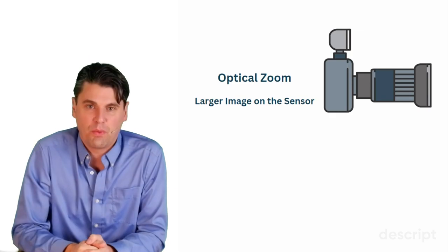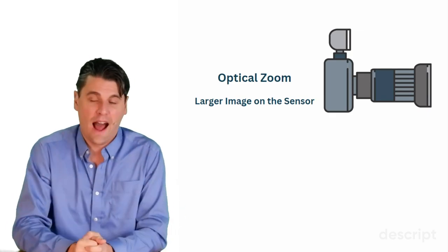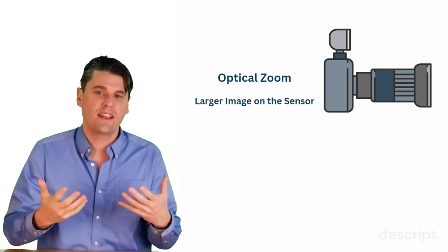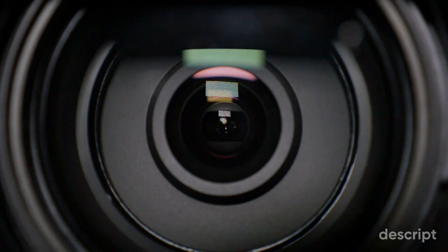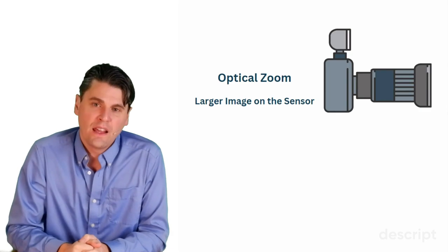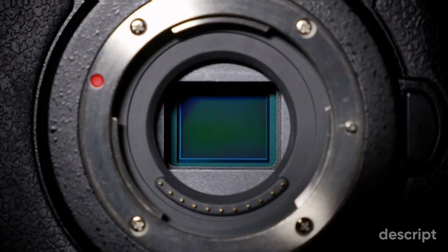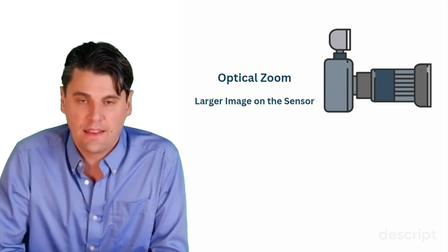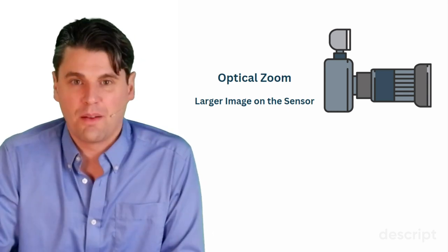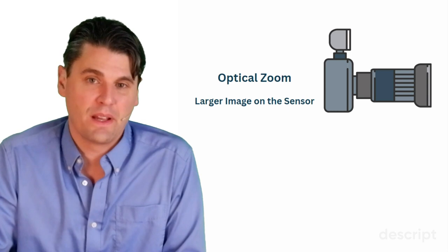If you want to think about the difference between an image intensifier and a flat panel detector, it's helpful to think about the difference between a camera that can use an optical zoom. With a standard traditional camera — like a DSLR or a film-based camera — these cameras can use an optical zoom, wherein they're actually changing what's projecting onto the sensor by changing the optics of the lens. That is actually the best type of magnification we can do.